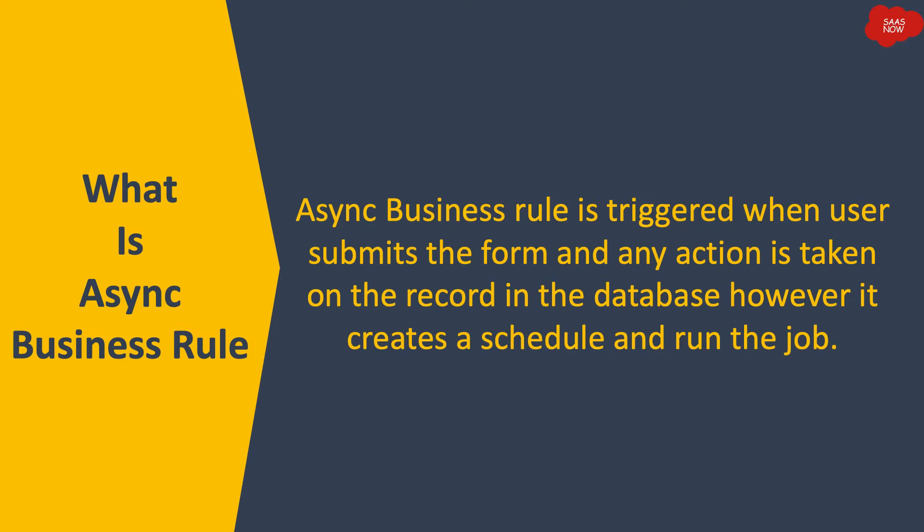However, when triggered it creates a schedule and runs the job. Async business rules are similar to after business rules, but they run in the background and are used when the system can wait to process and return the value.